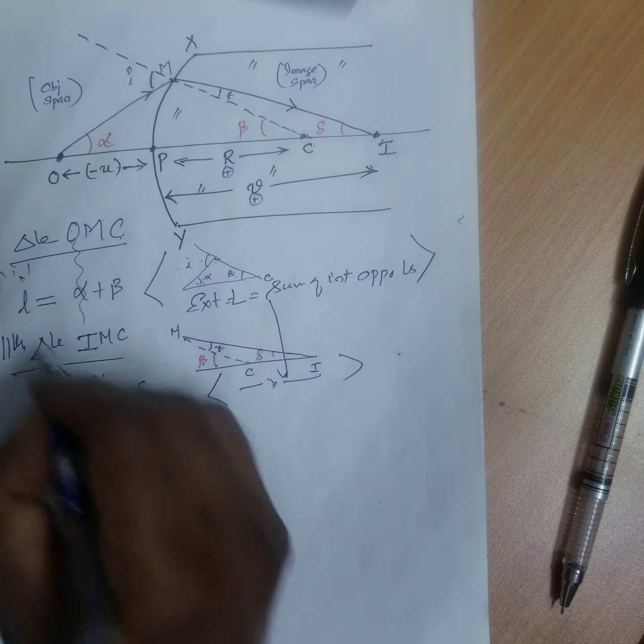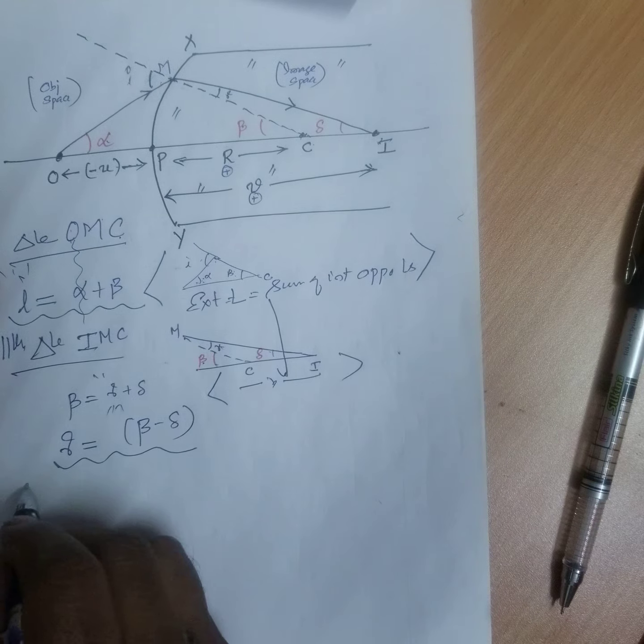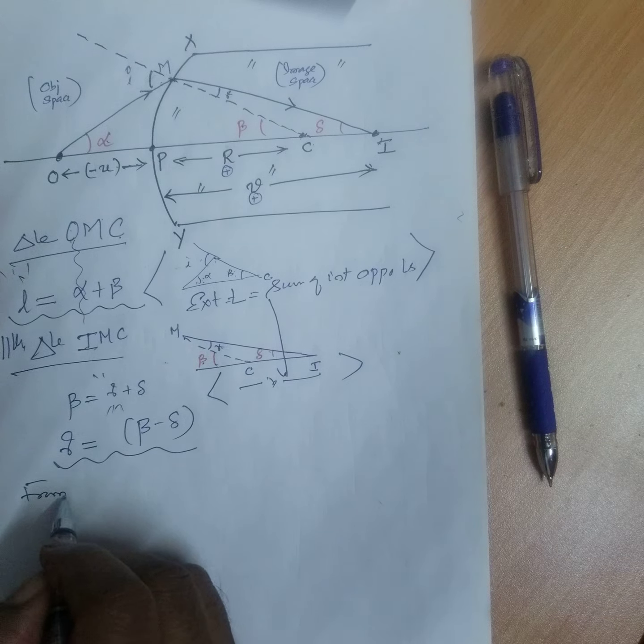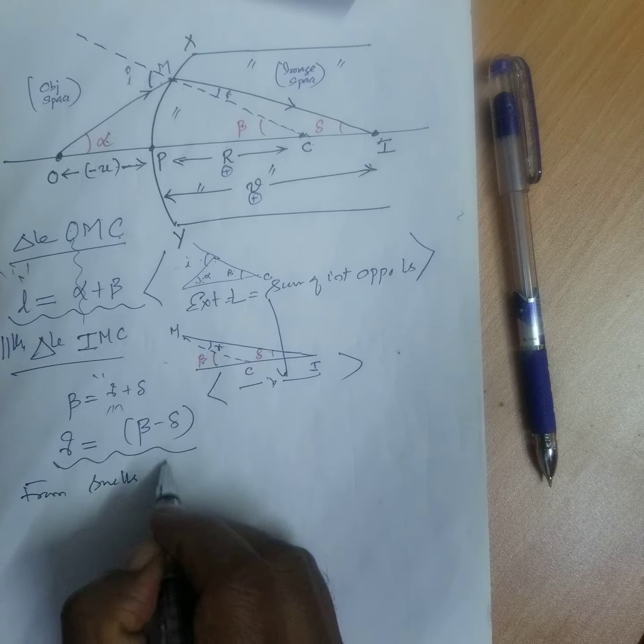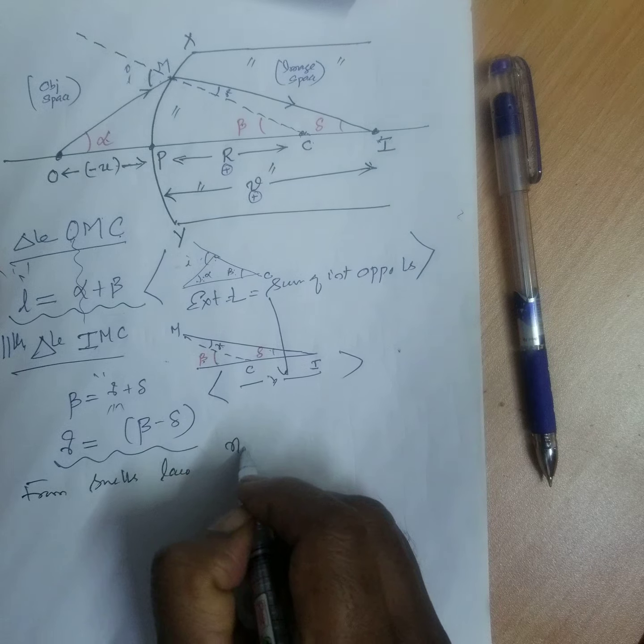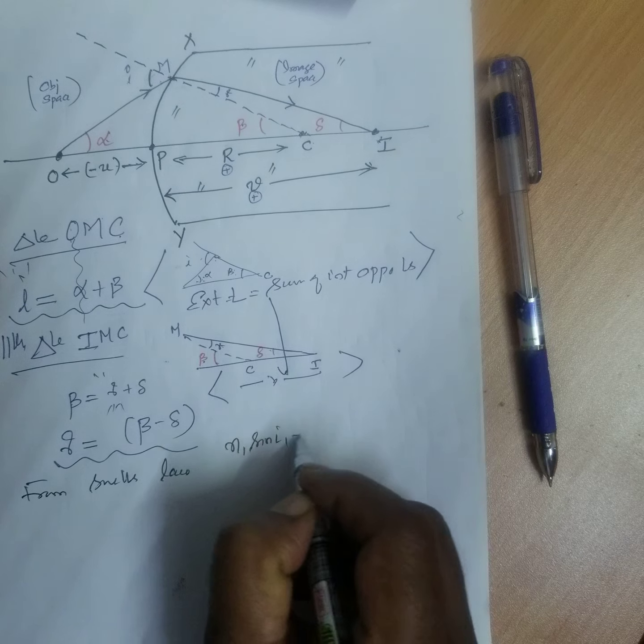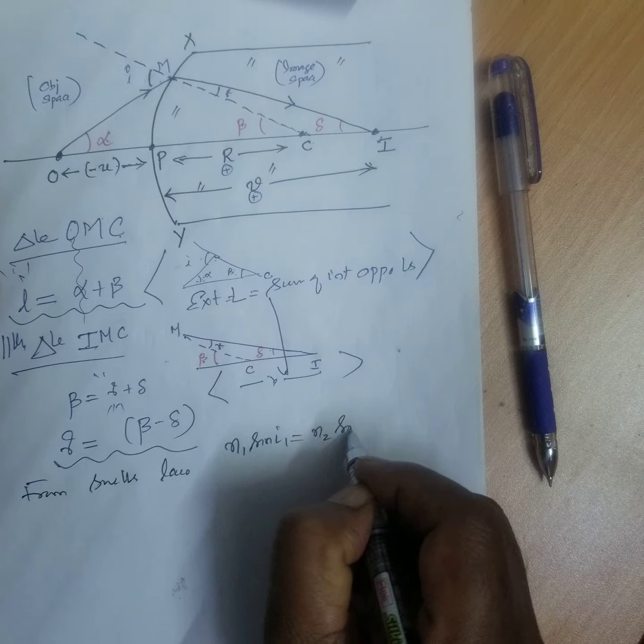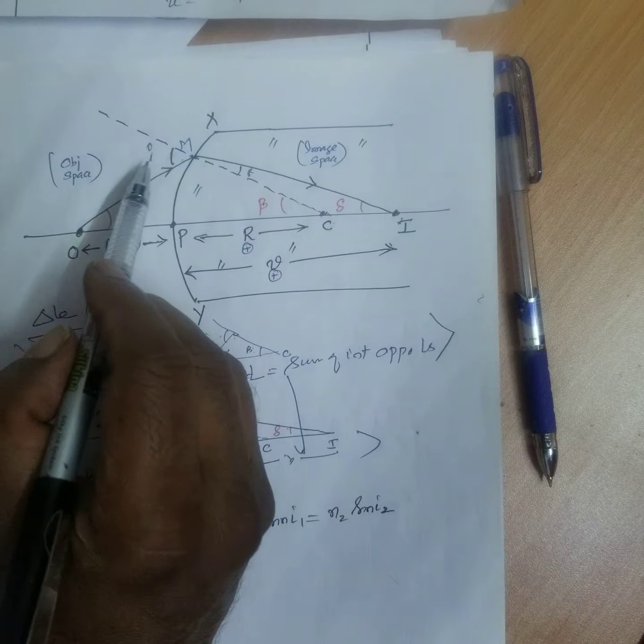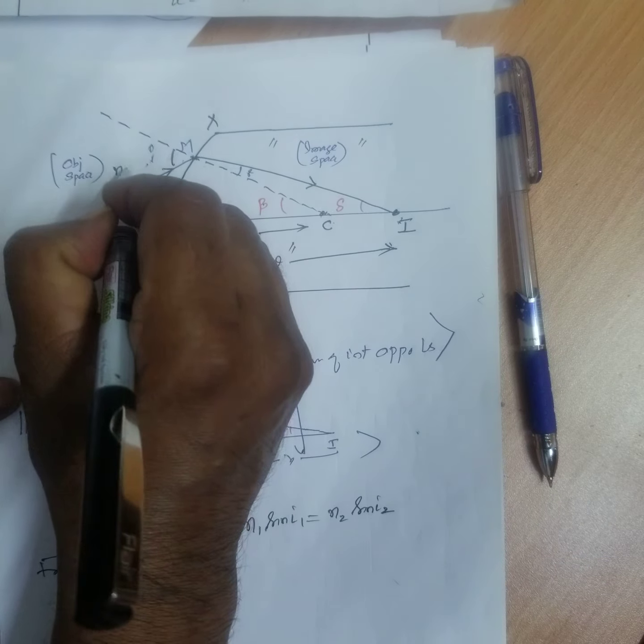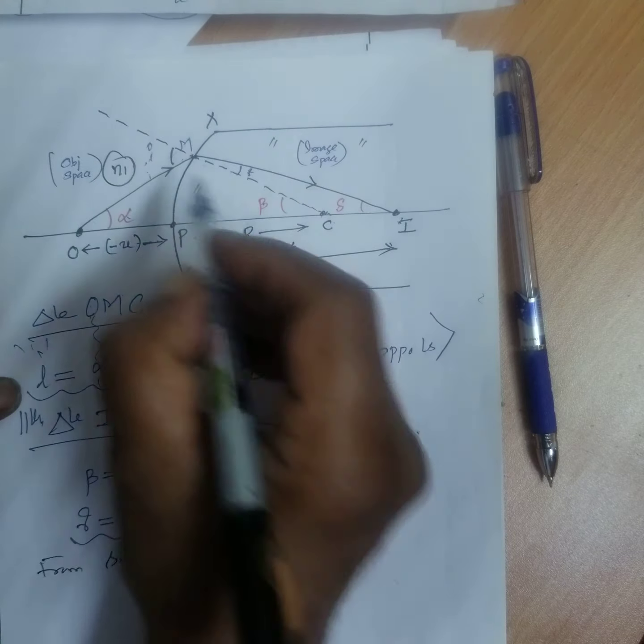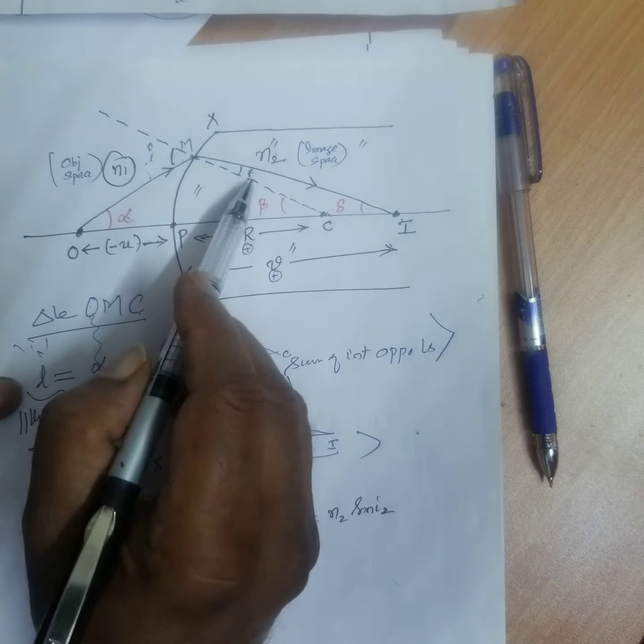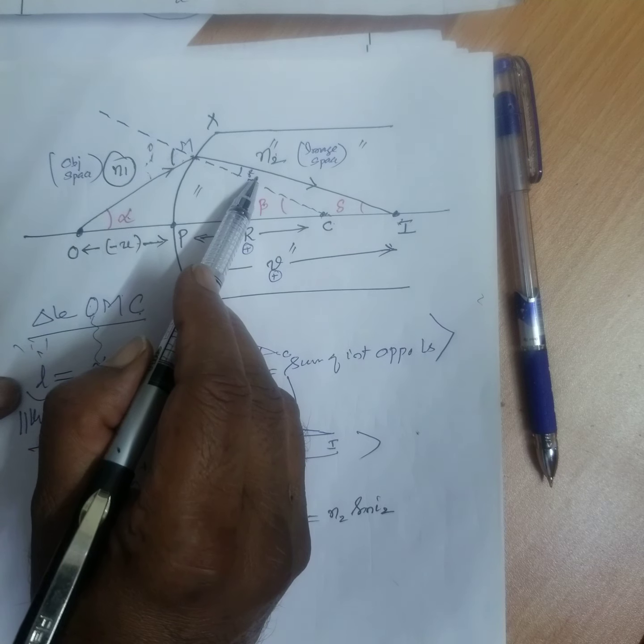Now, R and I from Snell's law. From Snell's law, N1 sin I1 equal to N2 sin I2. This is I1, this is N1. Object space. What is N2? This is N2 by I2. This is I1, this is I2.